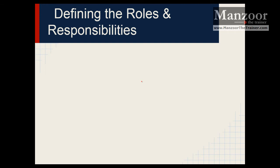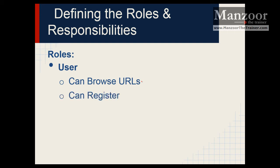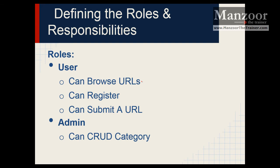So two roles: user and admin. A user can browse the existing URLs, can register, and can submit a URL. For admin — admin can create, read, update, and delete categories, can view all the users who registered, and can approve or reject URLs. Admin can also create, read, update, and delete URLs if needed. But as per our requirement this is what we want.